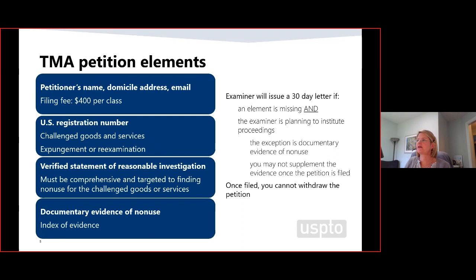The elements of a complete petition are as follows. Any person may file a petition. The filing fee is $400 per class. We need the petitioner's name, domicile, and email. If foreign domiciled, the petitioner must provide a designation of a U.S. attorney. If represented, the attorney name, postal address, email address, and bar information must all be provided.